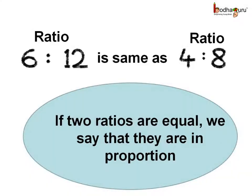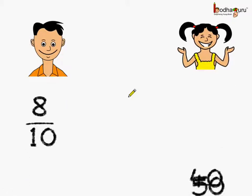But if the 2 ratios are equal we say that they are in proportion. Like here, 6 is to 12 is same as 4 is to 8 as both can be reduced to 1 by 2. Now coming to another example.